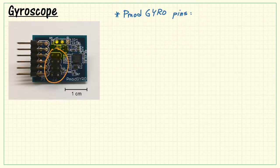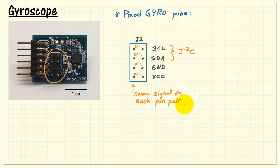Looking at the PMOD Gyro pins, we have two main connectors. J2 has the I2C pins and power and ground pins. Each pin pair is the same thing.